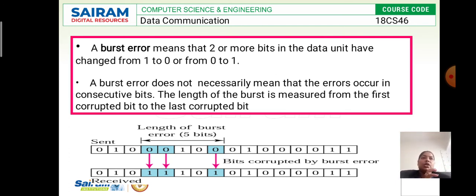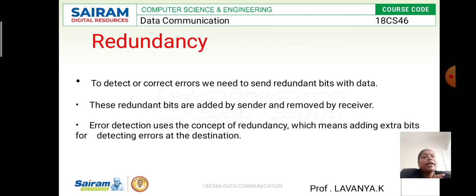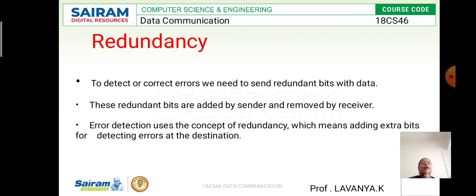Next is redundancy. Whenever we correct or detect errors, redundancy is required. Redundancy is very important for error correction and detection because it involves adding extra bits — a duplicate copy of data. To detect or correct errors, we need to send redundancy bits, which are extra bits, along with the data from the sender. The redundancy bits are added at the sender side and removed at the receiver side.